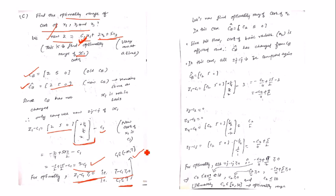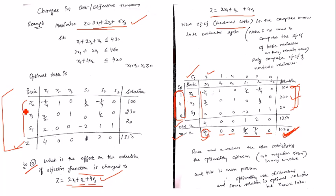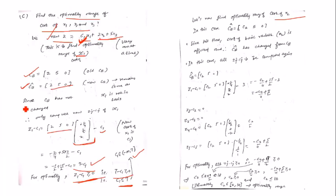Now for the optimality range of cost of x2. Unlike x1, x2 is in the basis. Since x2 is a basic variable, introducing a change in its cost coefficient changes the cb vector. Specifically, cb becomes [c2, 5, 0] instead of [2, 5, 0], so we must recompute zj − cj for all non-basic variables.